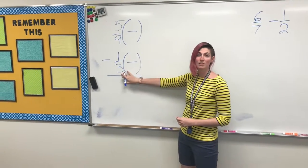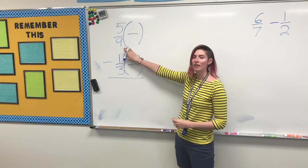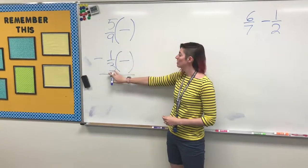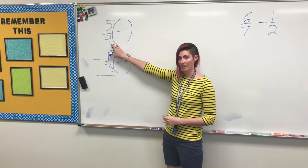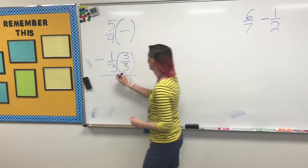When we check these denominators, we want to see if one of the denominators can fit into the other denominator evenly. 3 can be multiplied and turned into 9. 3 times 3 gets us to 9, so we want to turn this 3 into a 9.